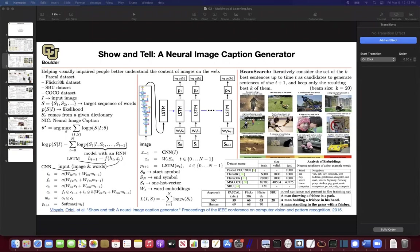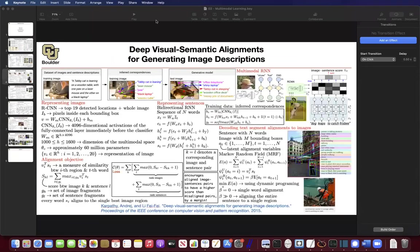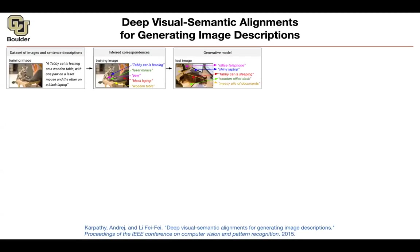The problem is that you don't have the luxury of having big datasets, because somebody needs to look at each image and describe it — that's the labeling task. The next paper asks: what if there is a way to increase the size of the data automatically? If you start with pairs of images and corresponding captions, what if you can focus on a bounding box around the face of the cat and say this part of the image corresponds to 'the tabby cat is leaning,' or put a bounding box around the mouse and say this corresponds to 'a laser mouse'?